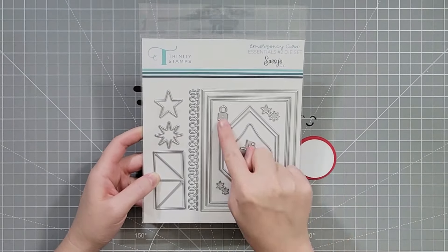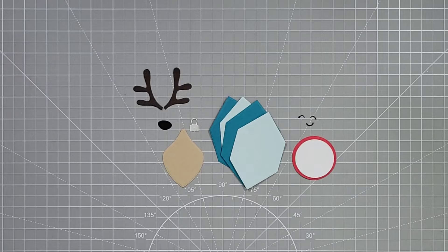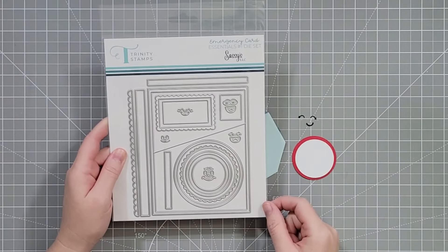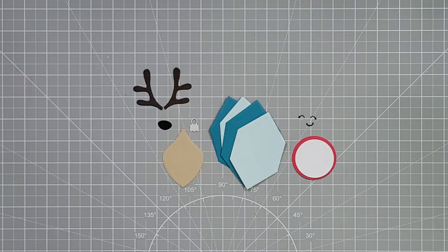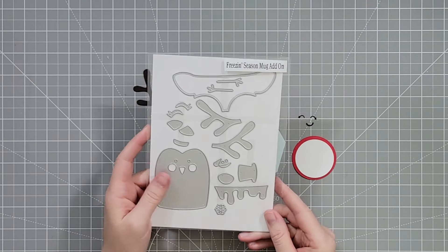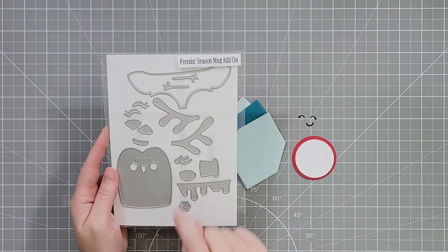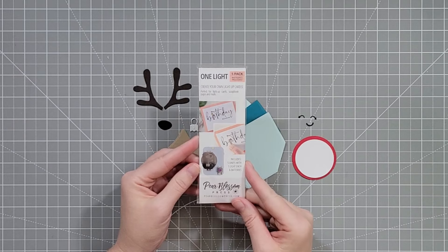So we're going to use Emergency Card Essentials die set number two for the hexagons and ornament, die set number one for the face and the circles, and then we're going to bring in another die set. This is the Freezen Season mug add-on and you don't actually need the mug. We're just going to take the antlers out of here to make our little reindeer and then we're going to use a one light.